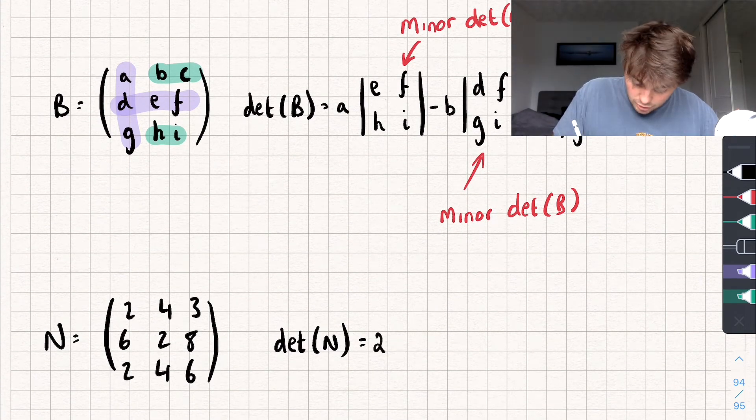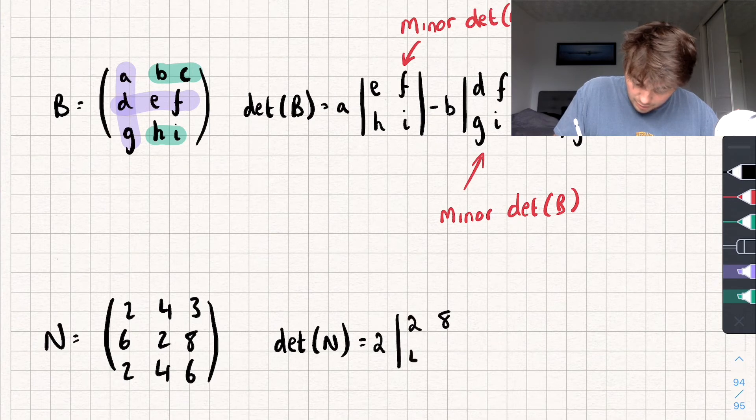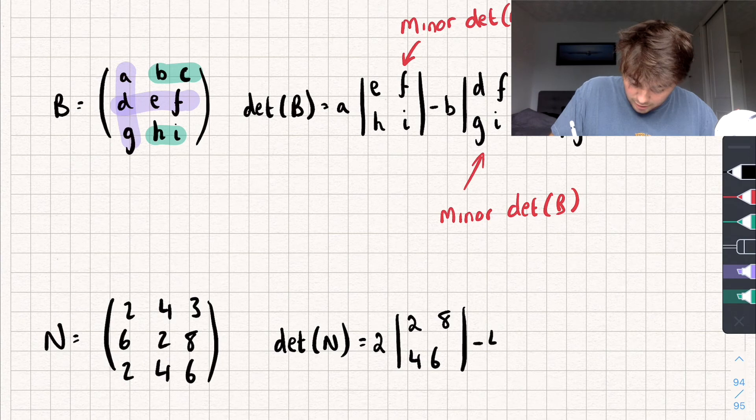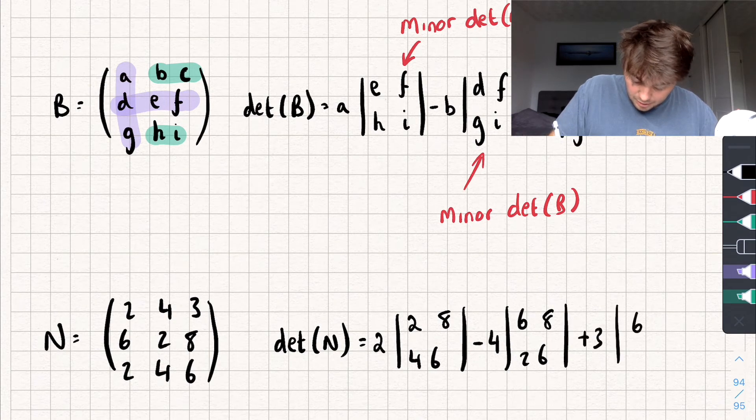So, I'm going to take element 2 multiplied by its minor determinant, so 2, 8, 4, 6. Then, don't forget, the next one is a subtraction. So, I'm going to subtract 4 multiplied by its minor determinant, so 6, 8, 2, 6. And finally, add on 3 multiplied by its minor determinant, so 6, 2, 2, 4.